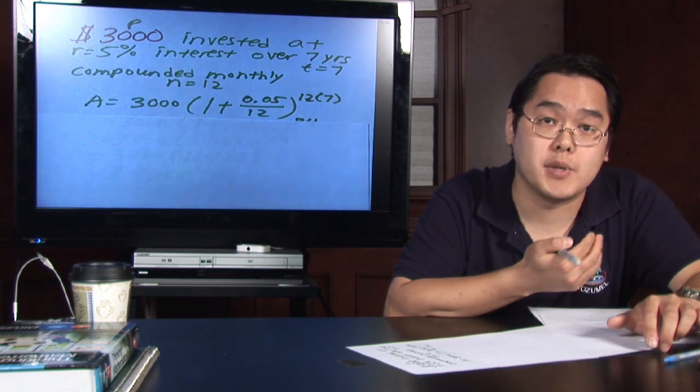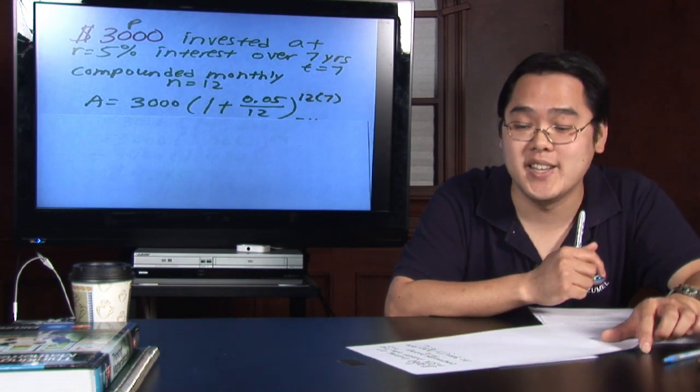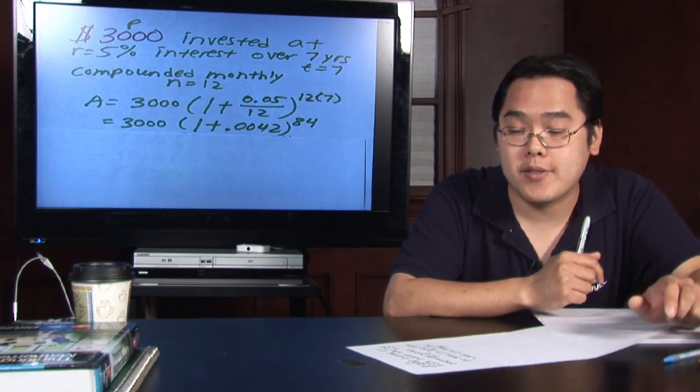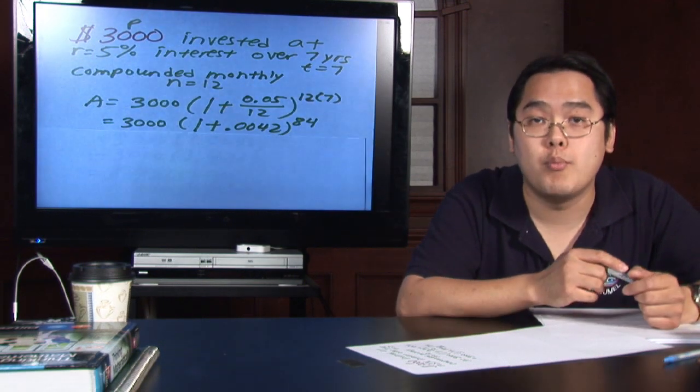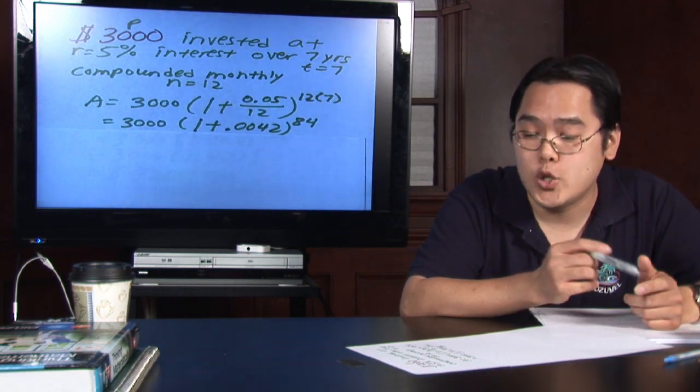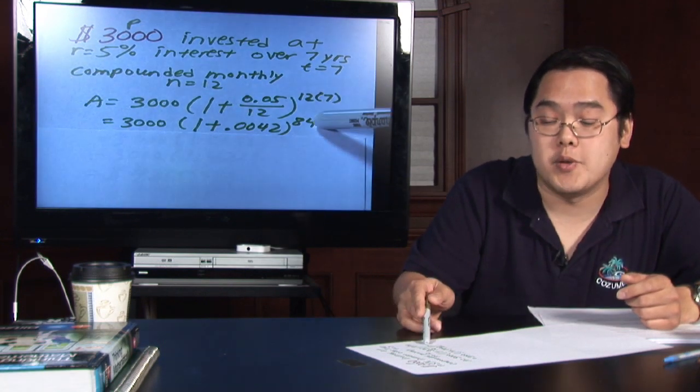You're going to need a calculator for this, because it's really hard to do all of this in your head, but when you do the math, you'll find that 0.05 divided by 12 is going to give you 0.0042, 12 times 7 over here is going to be 84.